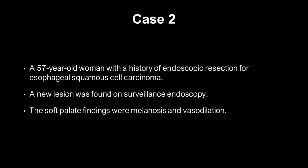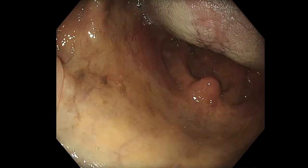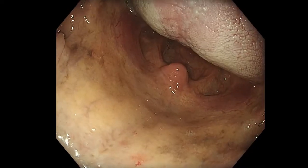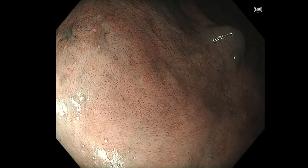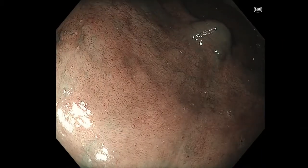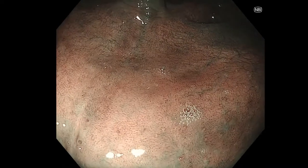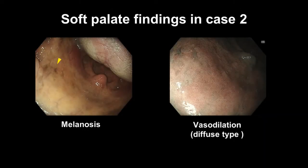The patient in case 2 was a 57-year-old woman with a history of endoscopic resection for esophageal squamous cell carcinoma. A new region was found on surveillance endoscopy. White light imaging showed melanosis in the left soft palate and diffuse vascular dilation. It was possible to evaluate vascular dilation without magnified endoscopy. These are the observed findings in case 2.